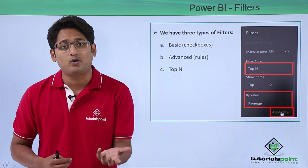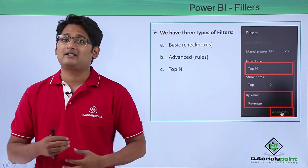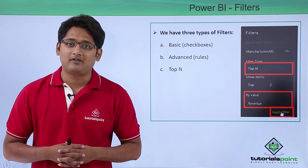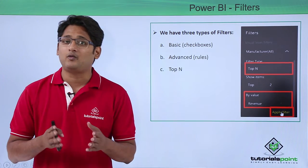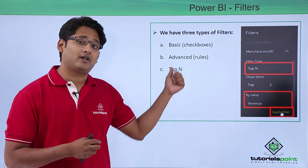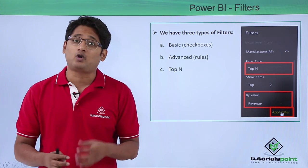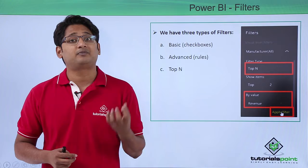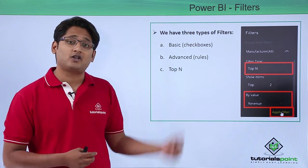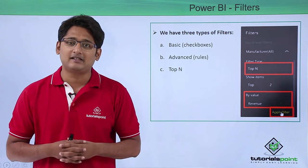We can also create our own rule. The third one is the Top N filter, which is the most used filter in Power BI. With the Top N filter I can get results the way I want — for example, showing the top five, top three, or top ten performers. How to apply these filters we will go ahead and see in our practical approach.